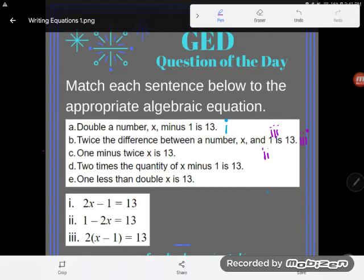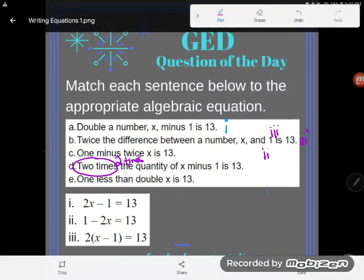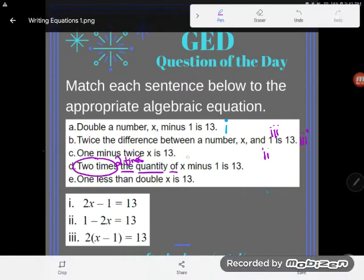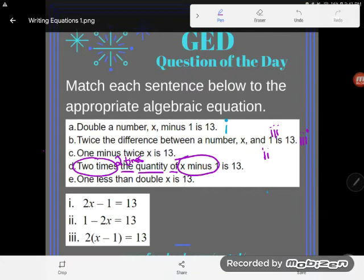So let's look at D. D says two times. Okay, so there I am multiplying by two again. So two times. And then notice what I'm timesing by. It doesn't say a number here. It says two times the quantity of. The quantity of x minus one. Two times the quantity of x minus one.